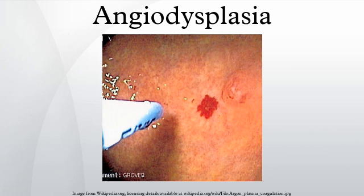Although angiodysplasia is probably quite common, the risk of bleeding is increased in disorders of coagulation. A classic association is Heyde's syndrome, in which von Willebrand factor (VWF) is proteolyzed due to high shear stress in the turbulent blood flow around the aortic valve. VWF is most active in vascular beds with high shear stress, including angiodysplasias, and deficiency of VWF increases the bleeding risk from such lesions. Apart from aortic valve stenosis, other conditions featuring high shear stress may also increase the risk of bleeding from angiodysplasia.